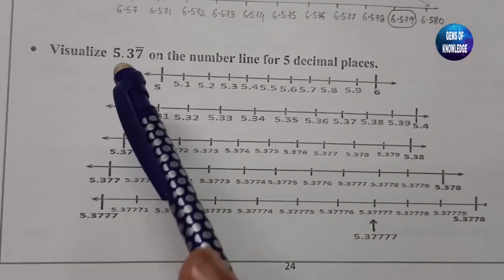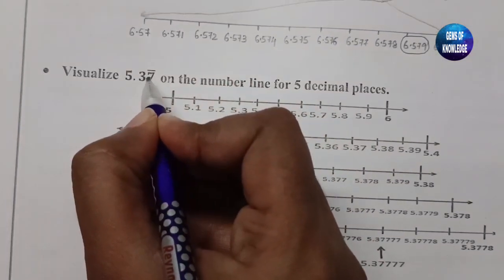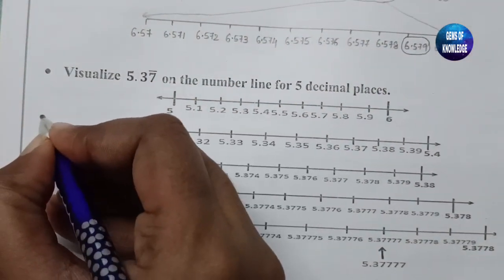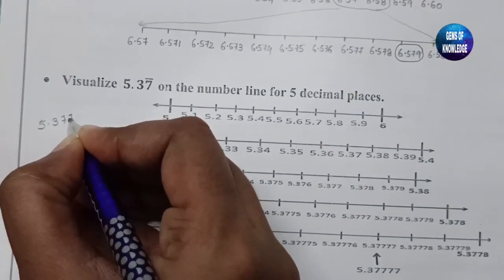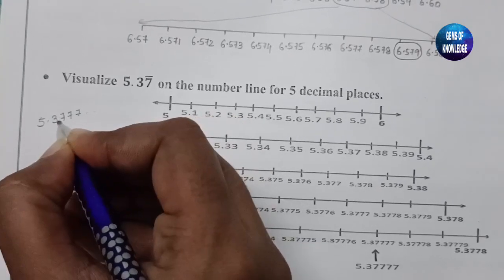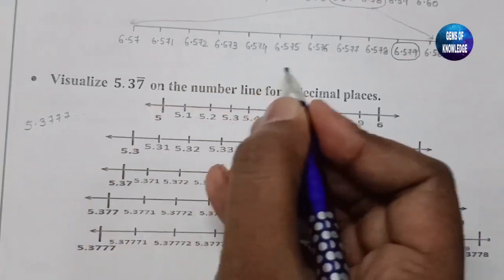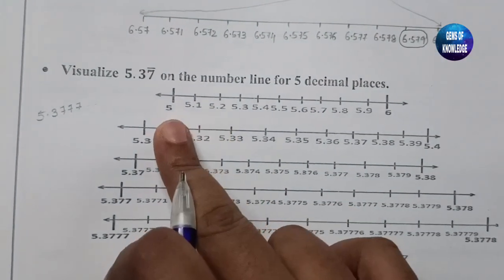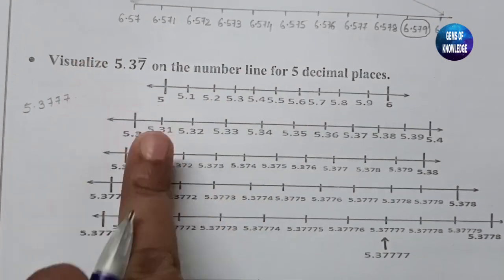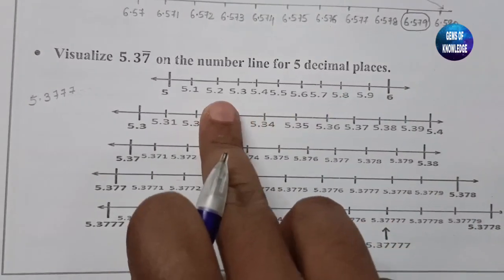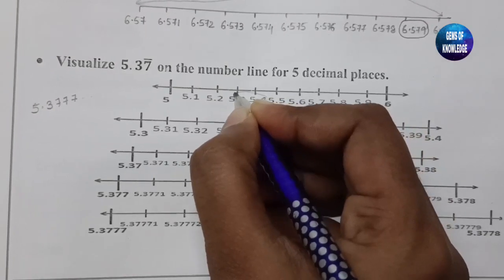For the next example, visualize 5.37 with a bar on 7. The bar means 5.3777... — the 7 keeps repeating. Whenever a bar is on a number it means that number repeats many times. Since we need 5.3, it lies between 5 and 6. We get 5.3 and 5.4 and circle that range.